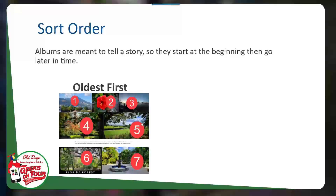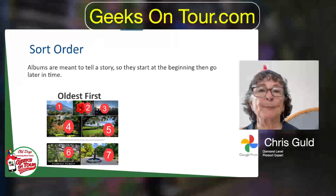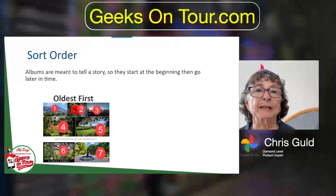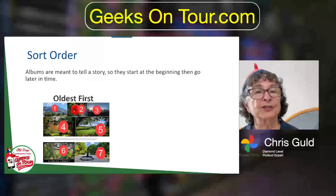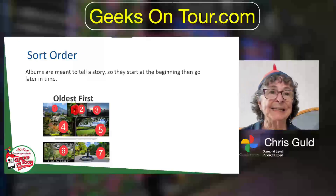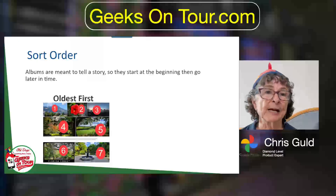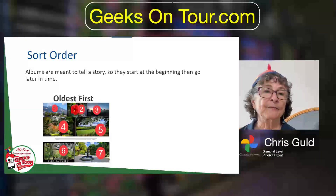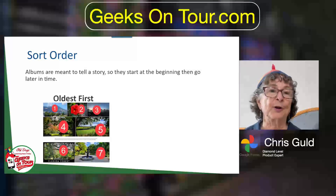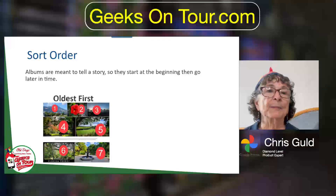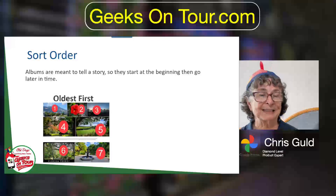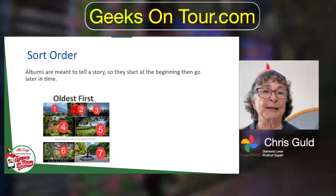Sort order. Albums are meant to tell a story, so they start at the beginning and then go later in time. I've picked these seven photos and put a big red number on them to make it clear what we're talking about.